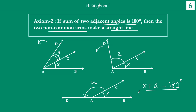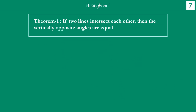We discussed these axioms because now we are going to go into our theorem and prove it — we will use this assumption in the proof. Now let us get into the proof. The theorem goes like this: if two lines intersect each other, then vertically opposite angles are equal.